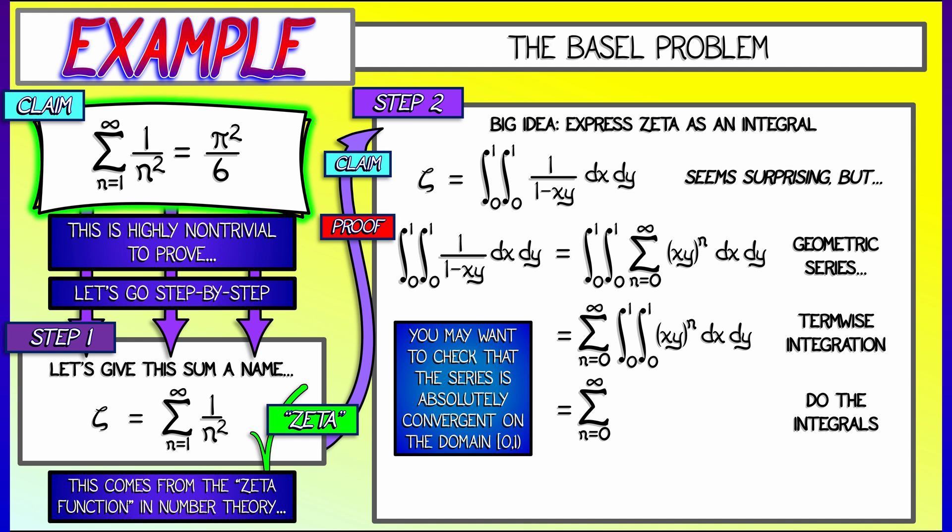I'm going to add up the double integrals of quantity xy to the n. Now, you got to check that everything is absolutely convergent on the domain so that we can do term-wise integration. But trust me, that's right. It's going to work. And what do we have to do? We just have to do the integrals.